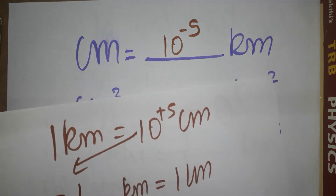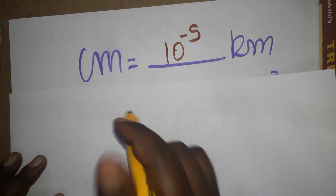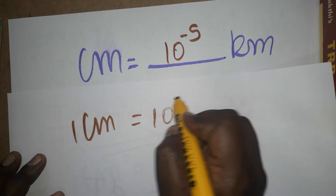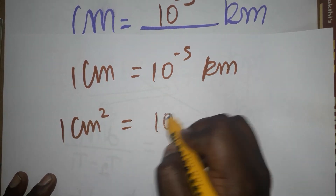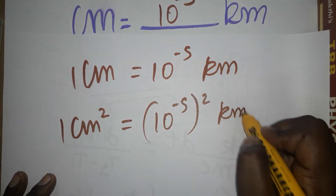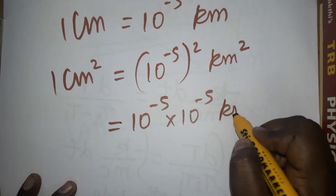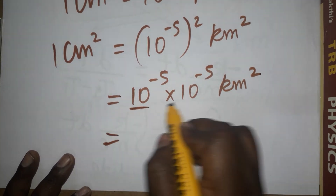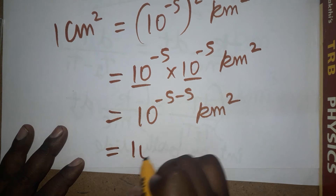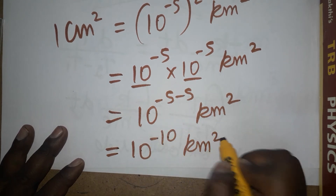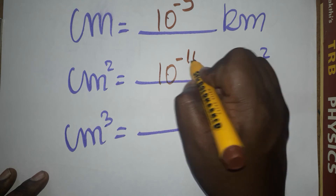Next, centimeter square equals how many kilometer square? Very simple — you already know the centimeter to kilometer conversion. One centimeter equals 10⁻⁵ kilometer. To get centimeter square, just square the equation: (10⁻⁵)² kilometer square. When squaring, the base stays the same and powers add: minus five plus minus five gives minus ten. So one centimeter square equals 10⁻¹⁰ kilometer square.